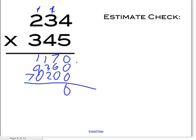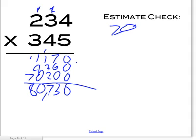Then you add it all up. You get 8,703 as your answer. And for the estimate check, you'd estimate to 200 and 300. Without actually solving it, what is 200 times 300? 2 times 3 is 6, add four zeros, and you get 60,000.